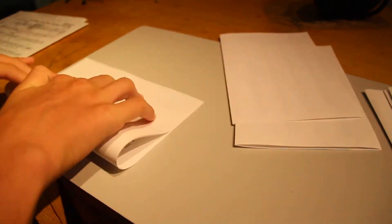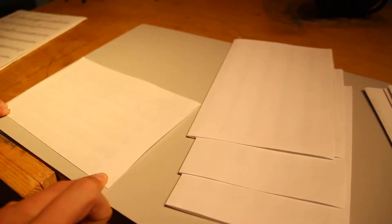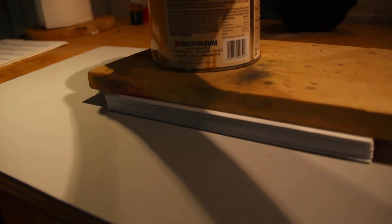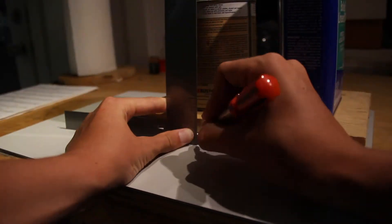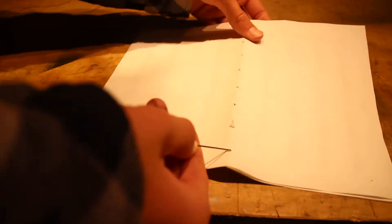After I folded the pages in half, I made sure they were all even. Then I put wood on top of them and weighed them down with some finishes to get even markings for the holes.